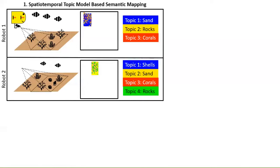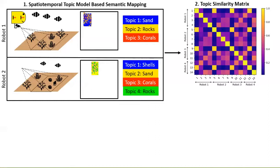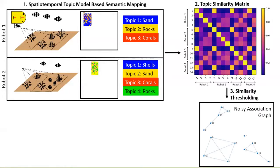The individual robots regularly transmit their topic models to a central node, which computes a similarity metric between every pair of topics to create a topic similarity matrix. The central node thresholds these similarity values to find highly similar topics, and models them in a noisy association graph.